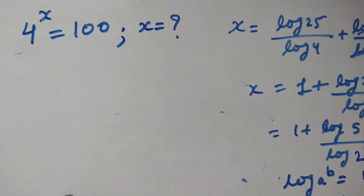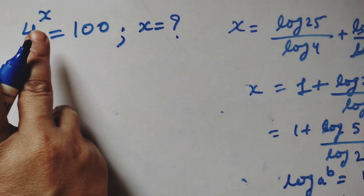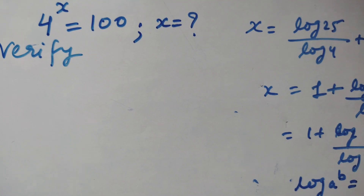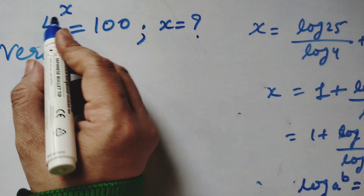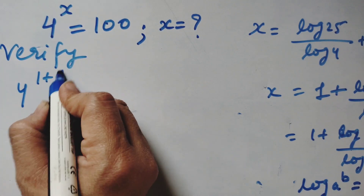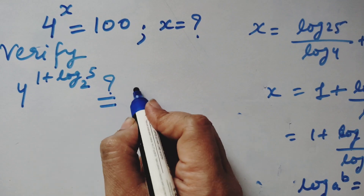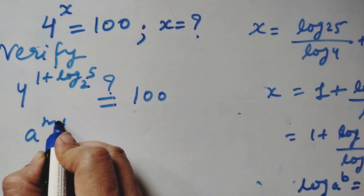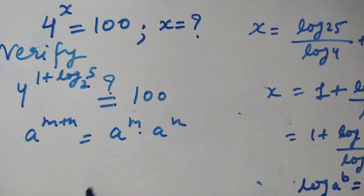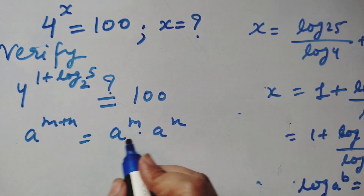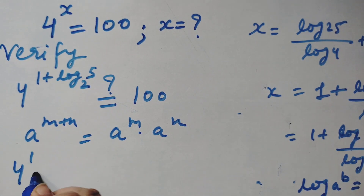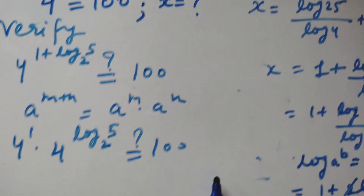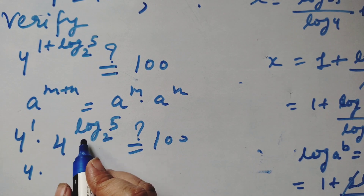Now we will verify the answer. The question is 4 power x equals 100. Substituting x equals 1 plus log 5 base 2, we get 4 power (1 plus log 5 base 2). Using the exponent rule a power (m plus n) equals a power m times a power n, this becomes 4 power 1 times 4 power (log 5 base 2) — which is 4 times 4 power (log 5 base 2).